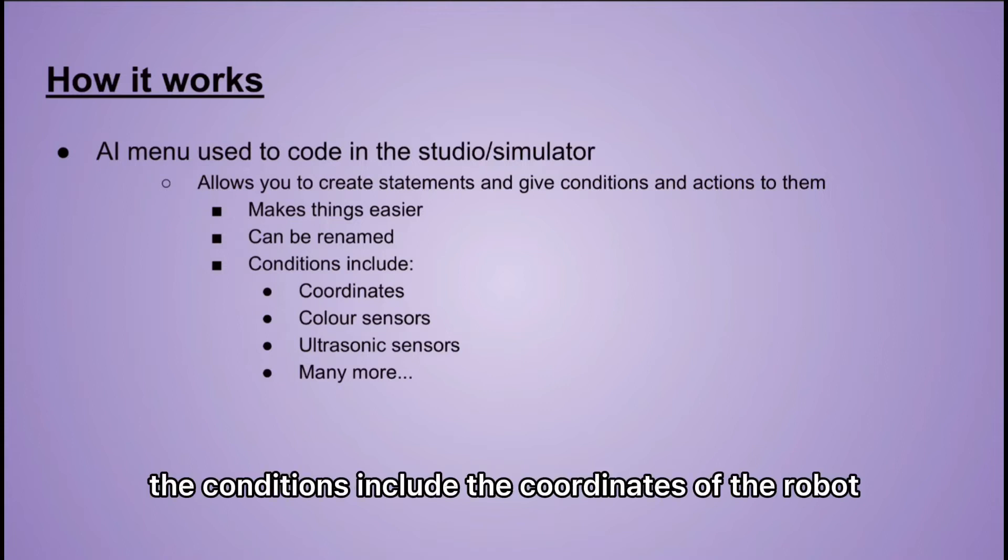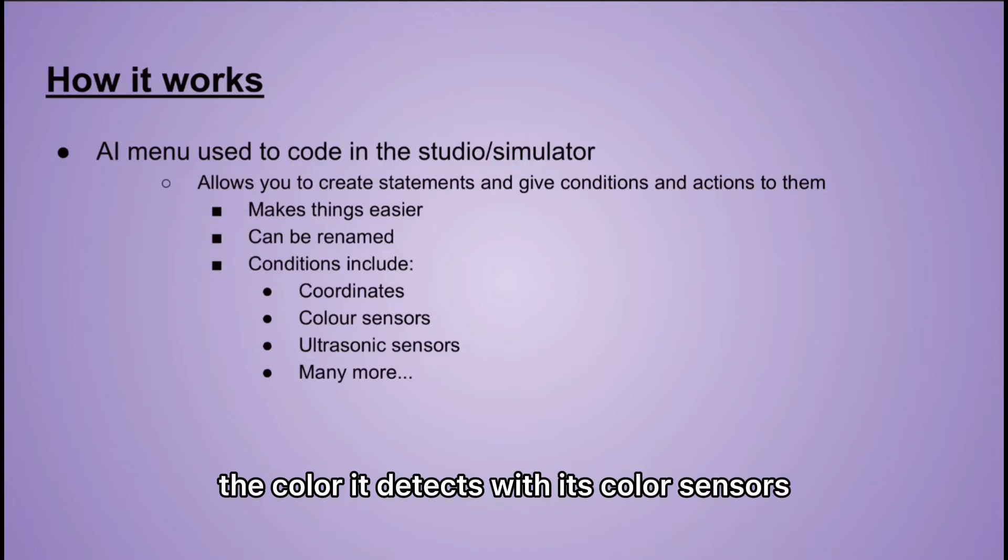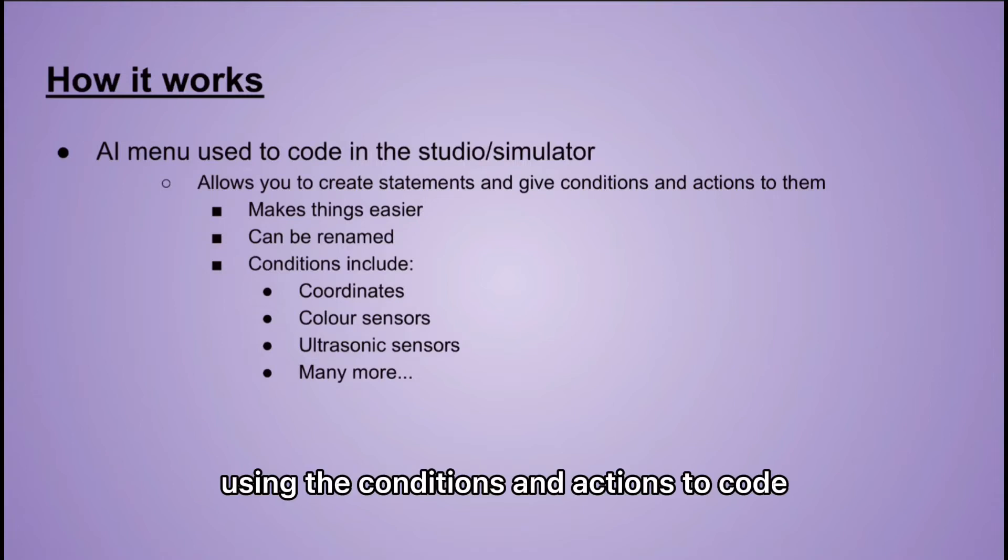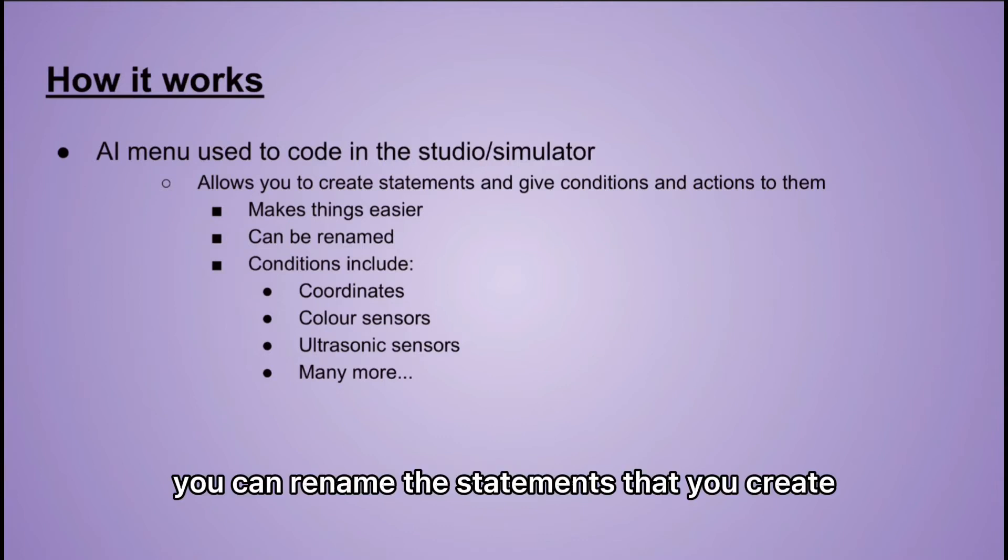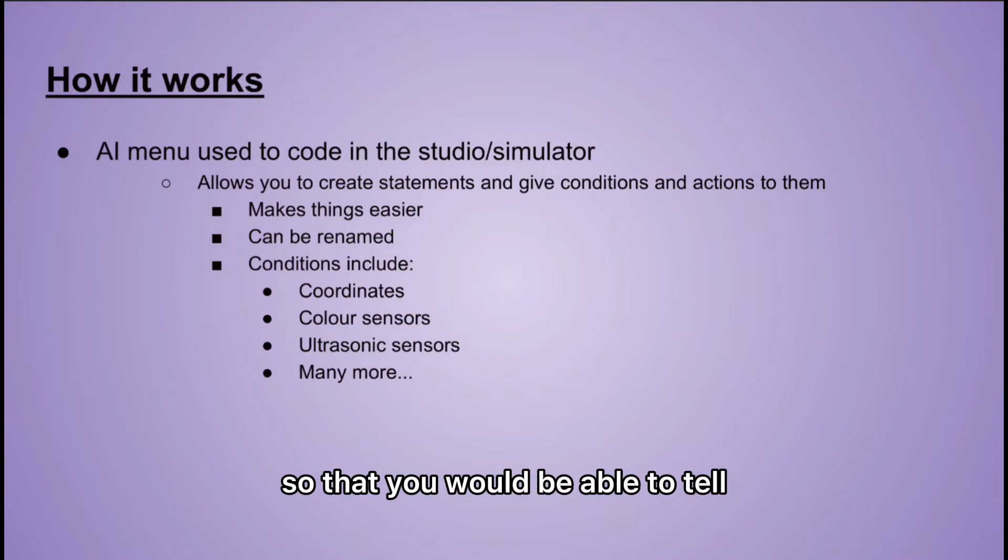For example, the conditions include the coordinates of the robot, the color it detects with its color sensors, its ultrasonic sensors and many more. Using the conditions and actions to code makes things easier and clearer. You can rename the statements that you create so that you would be able to tell what the statement is for and keep things much tidier when coding.